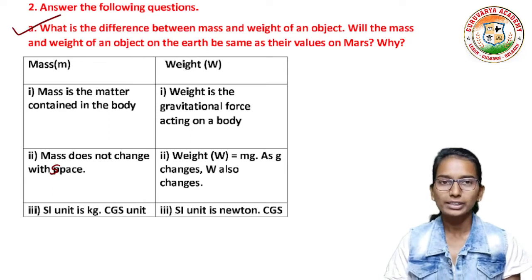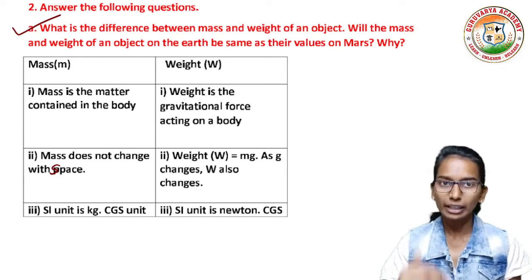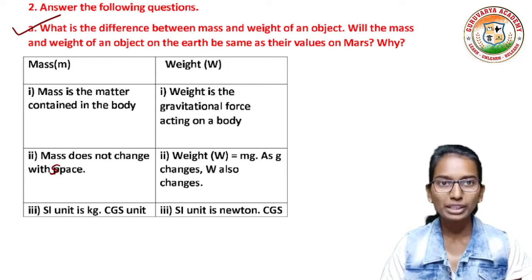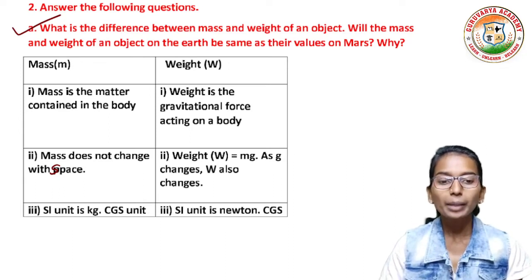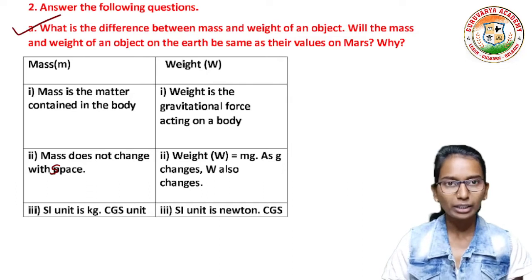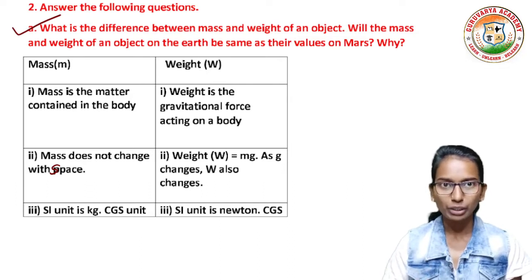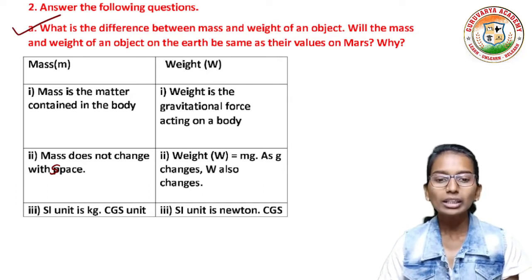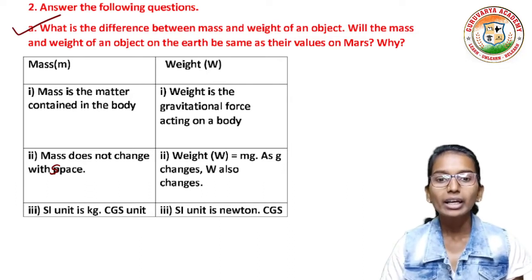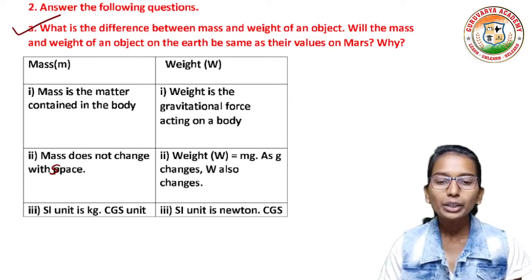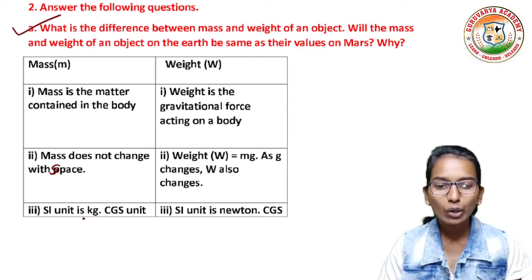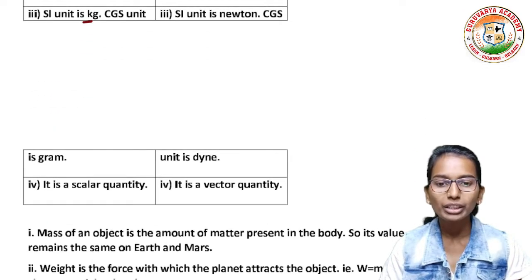As G changes, W also changes — gravitational force changes, gravity changes, so weight will change. The SI unit of mass is kilogram and CGS unit is gram.